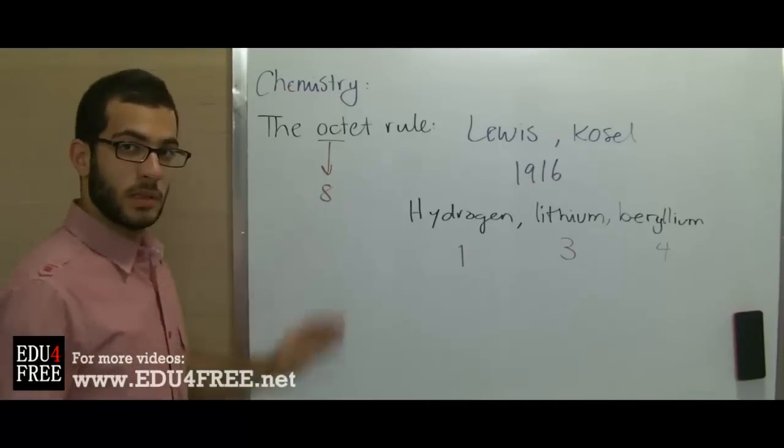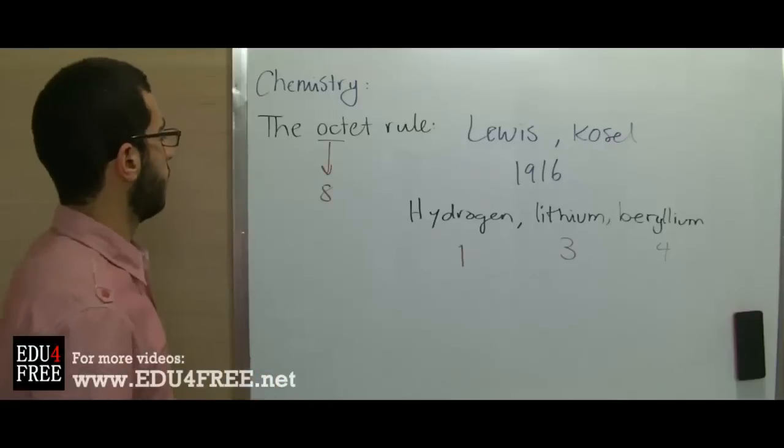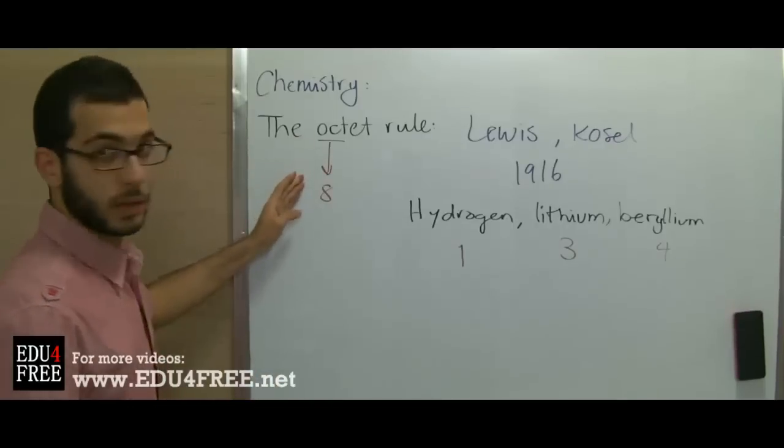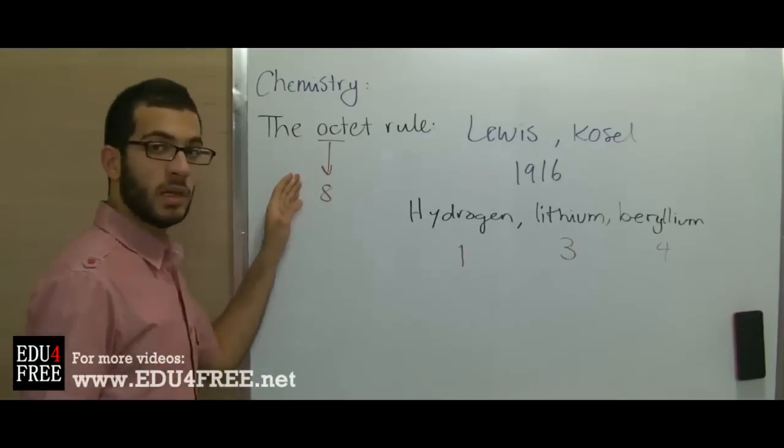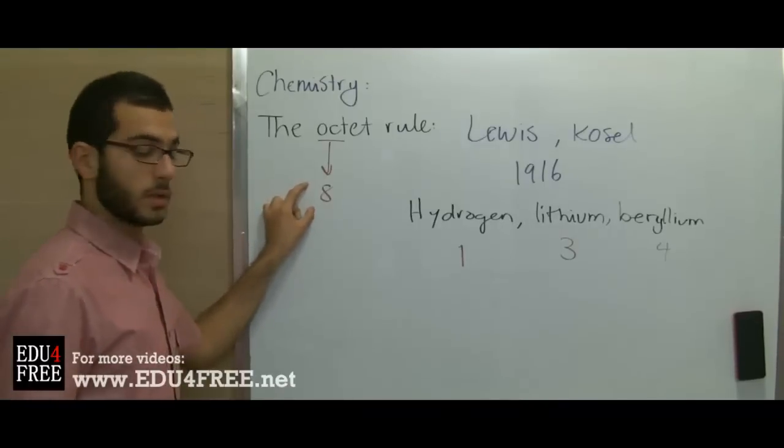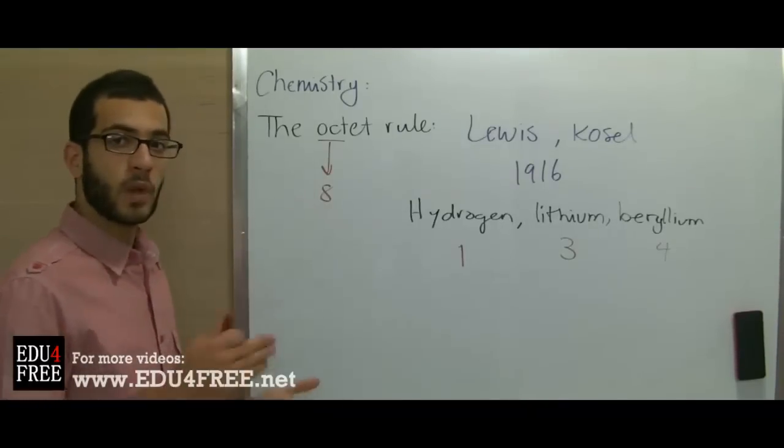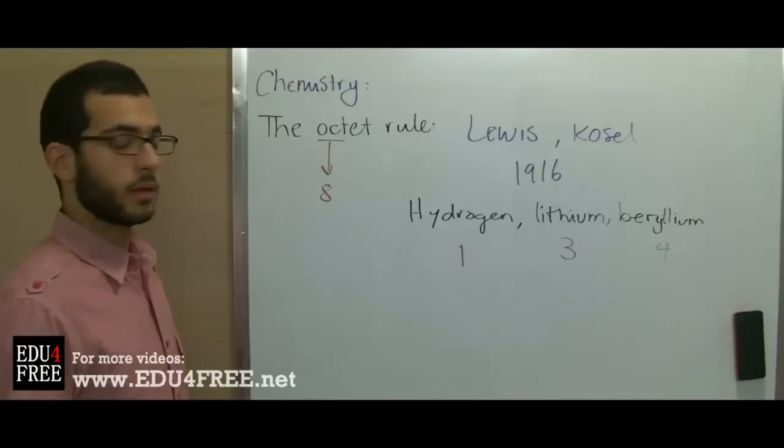All the other elements, in the covalent bond they reach the octet structure, meaning they contain 8 electrons in the outermost energy level when they share electrons with other atoms.